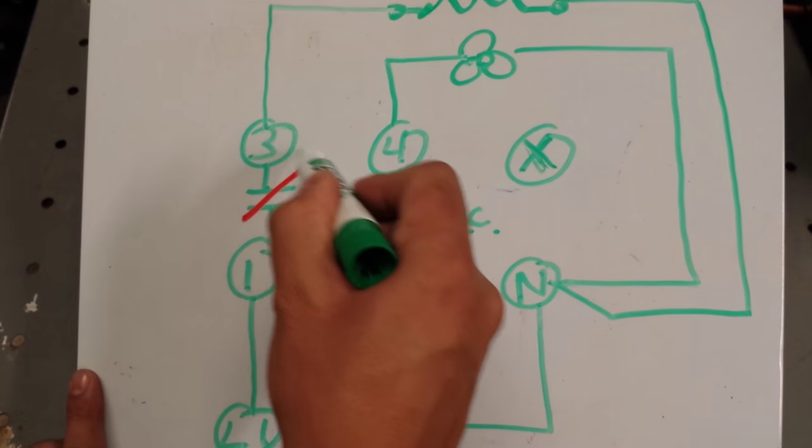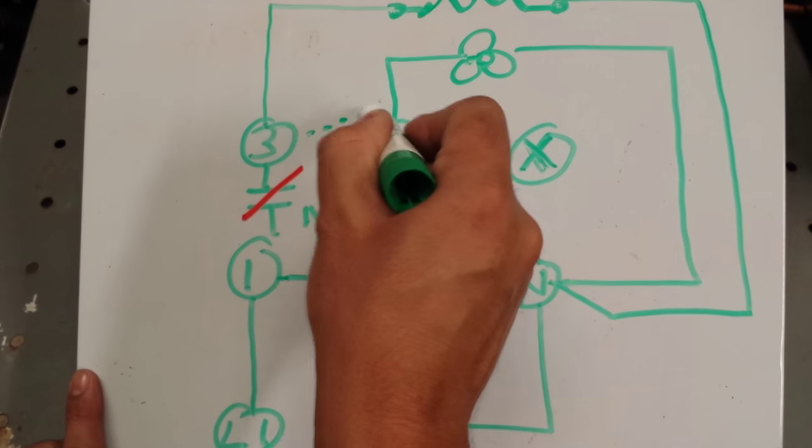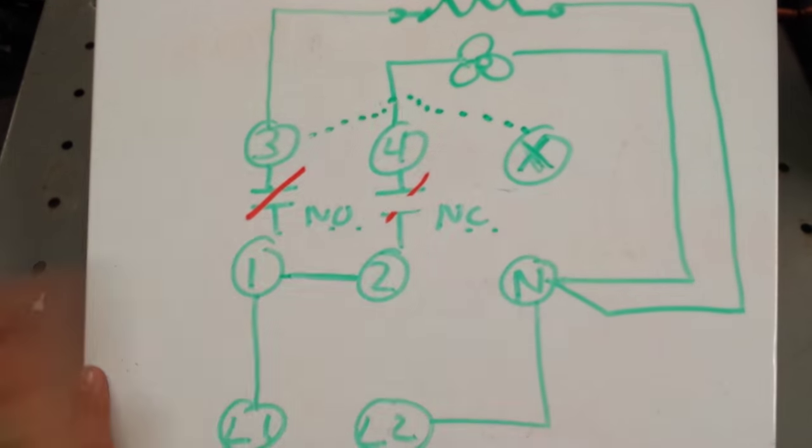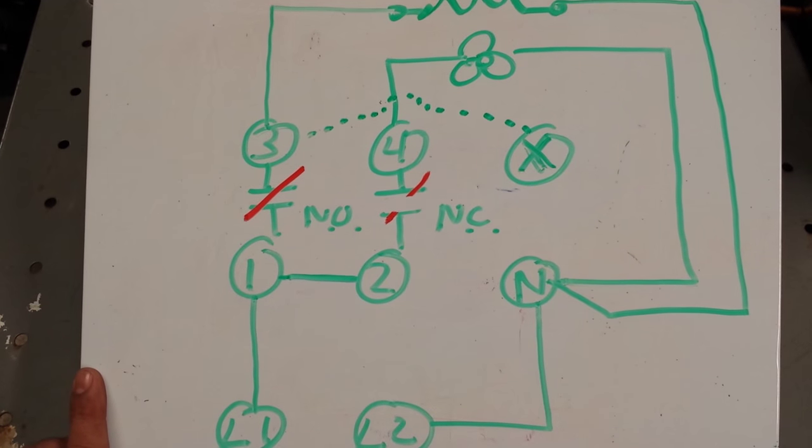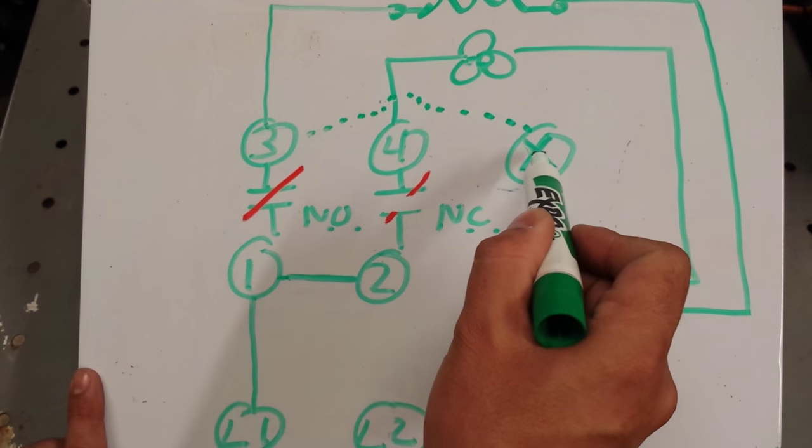Before we do that, let me tell you about the inside, behind the scenes wiring of that X terminal. So behind the scenes of the X, of the clock here, and I'll put this in dashes, you have a wire coming from terminal 3 to X. So what that means is L1 goes to 3, and then behind the scenes that L1 also feeds X.